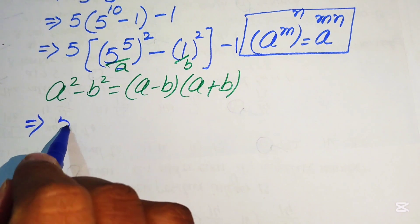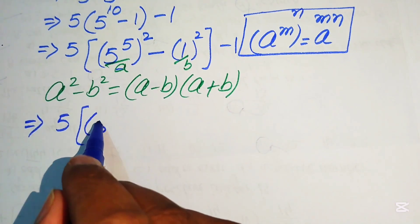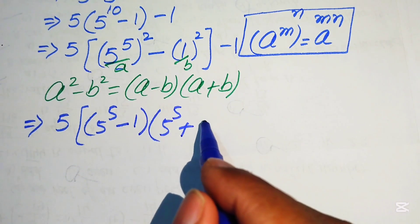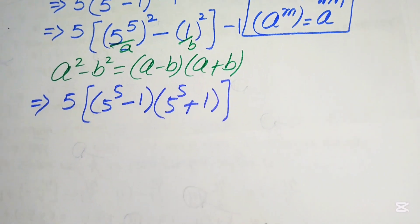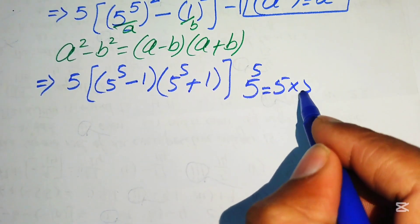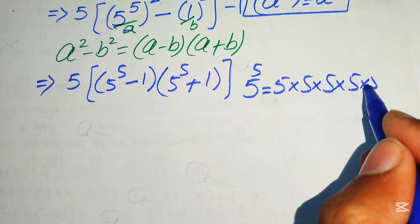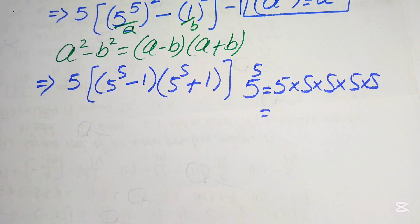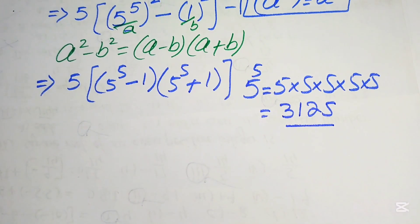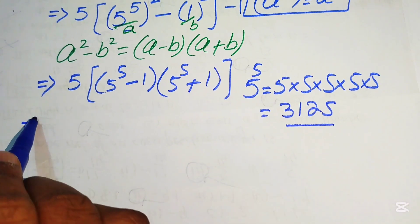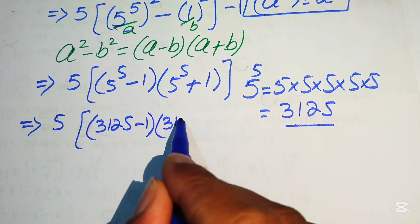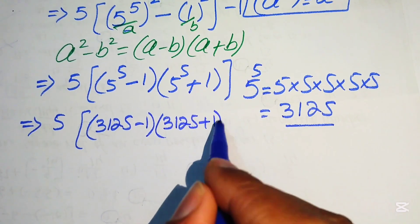After applying the difference of squares, we have 5 times the quantity: a minus b, which is 5 to the power of 5 minus 1, times a plus b, which is 5 to the power of 5 plus 1. To simplify further, we compute 5 to the power of 5 by multiplying 5 by itself five times, which gives 3125.